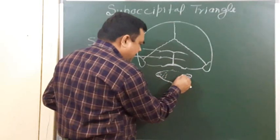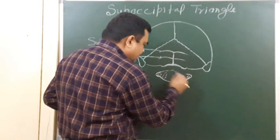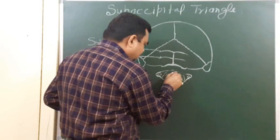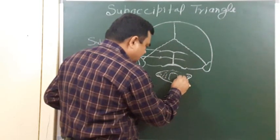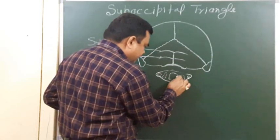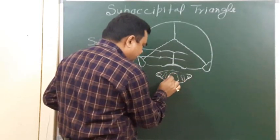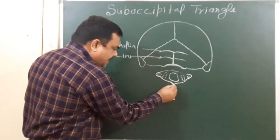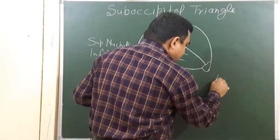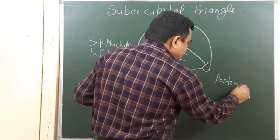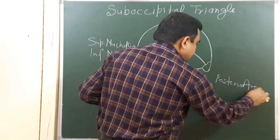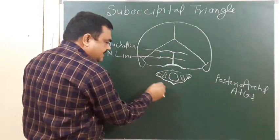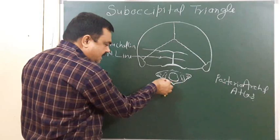This is the anterior arch, this is the posterior articular surface. This is the vertebral canal. This is the posterior arch with its posterior articular surface. This is the posterior tubercle of the atlas.